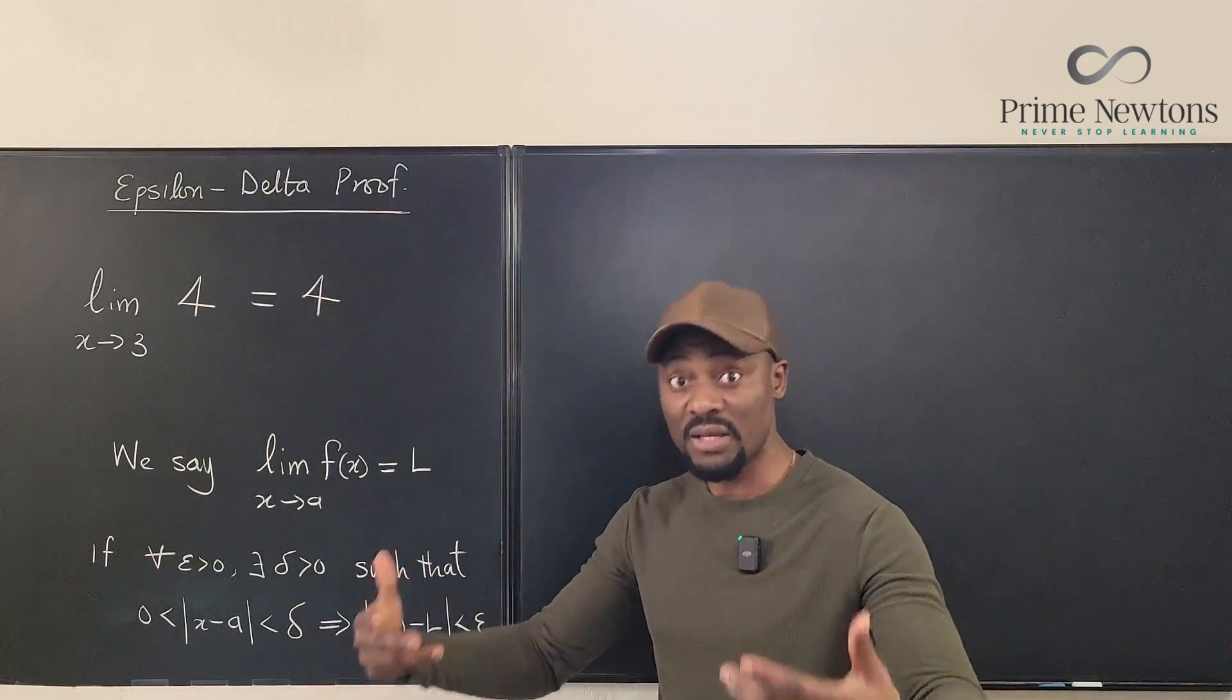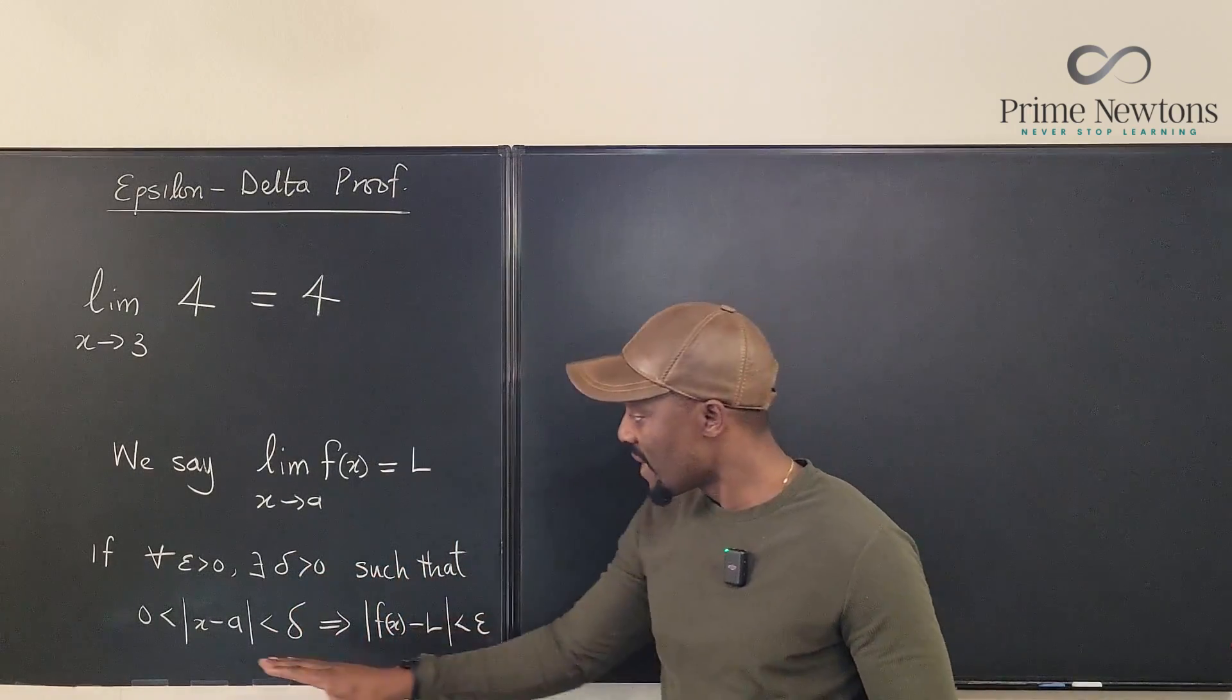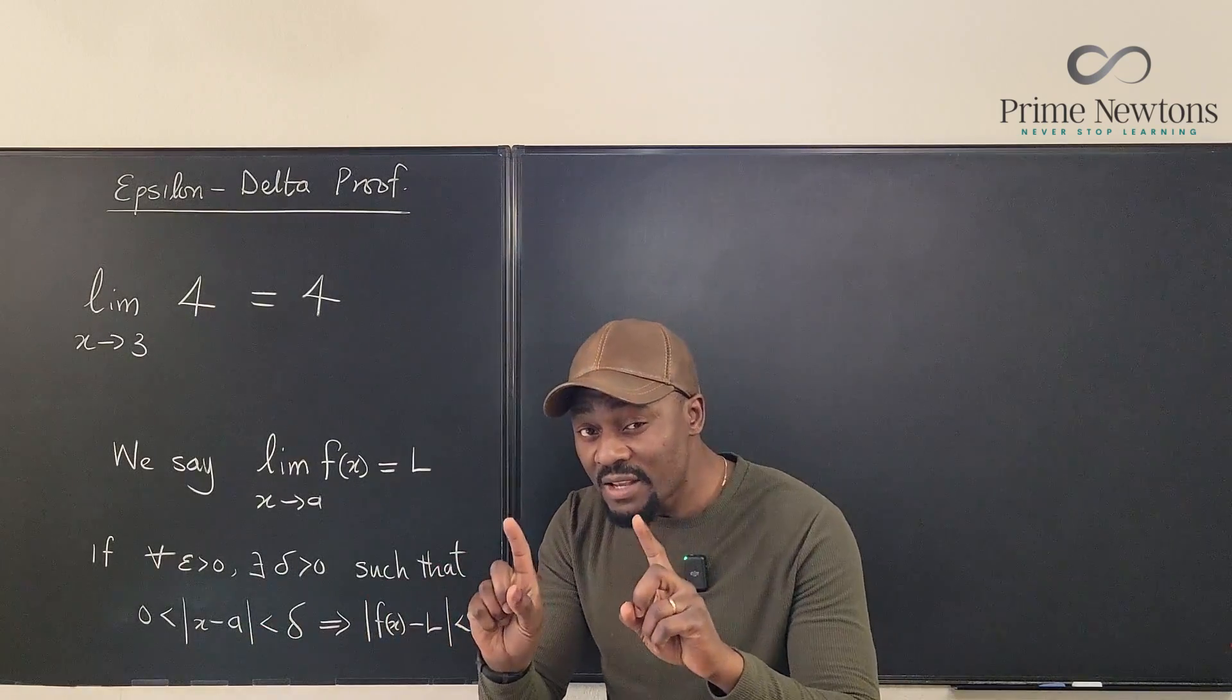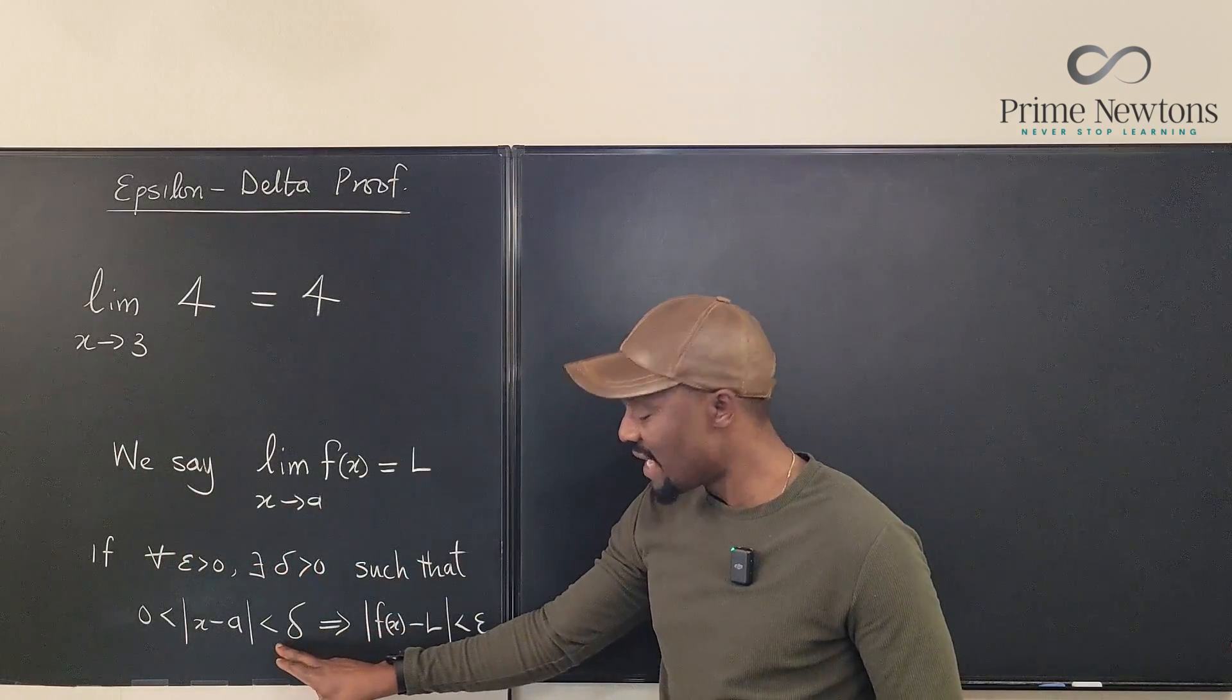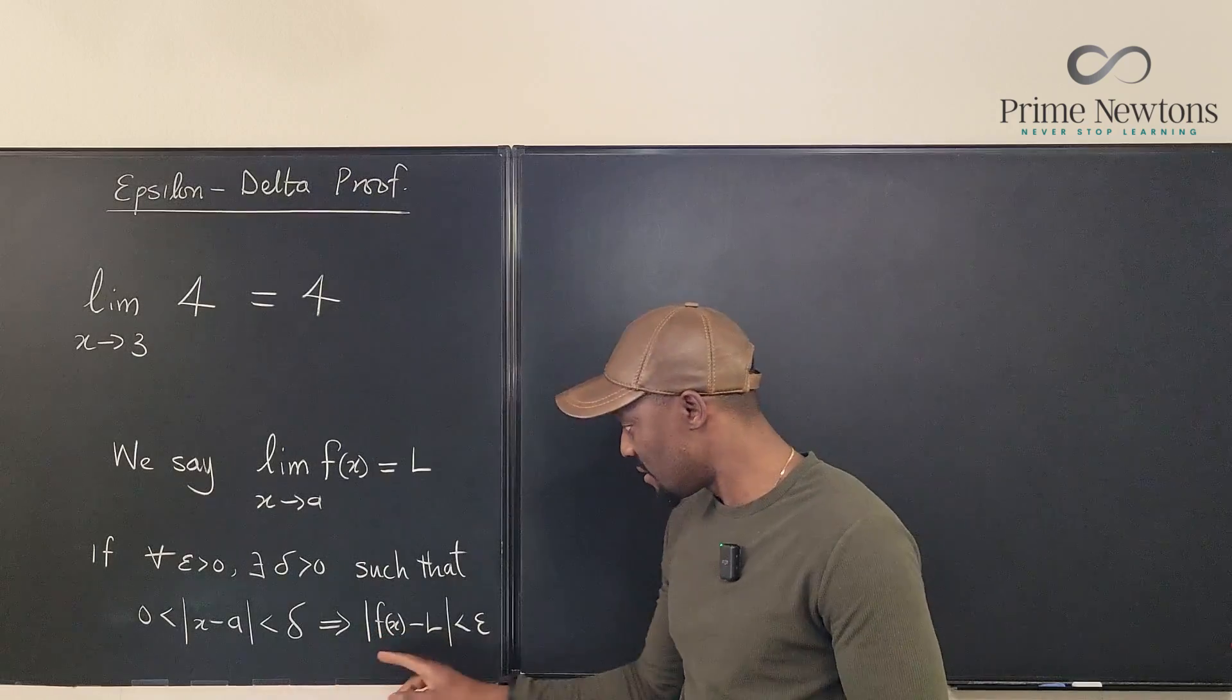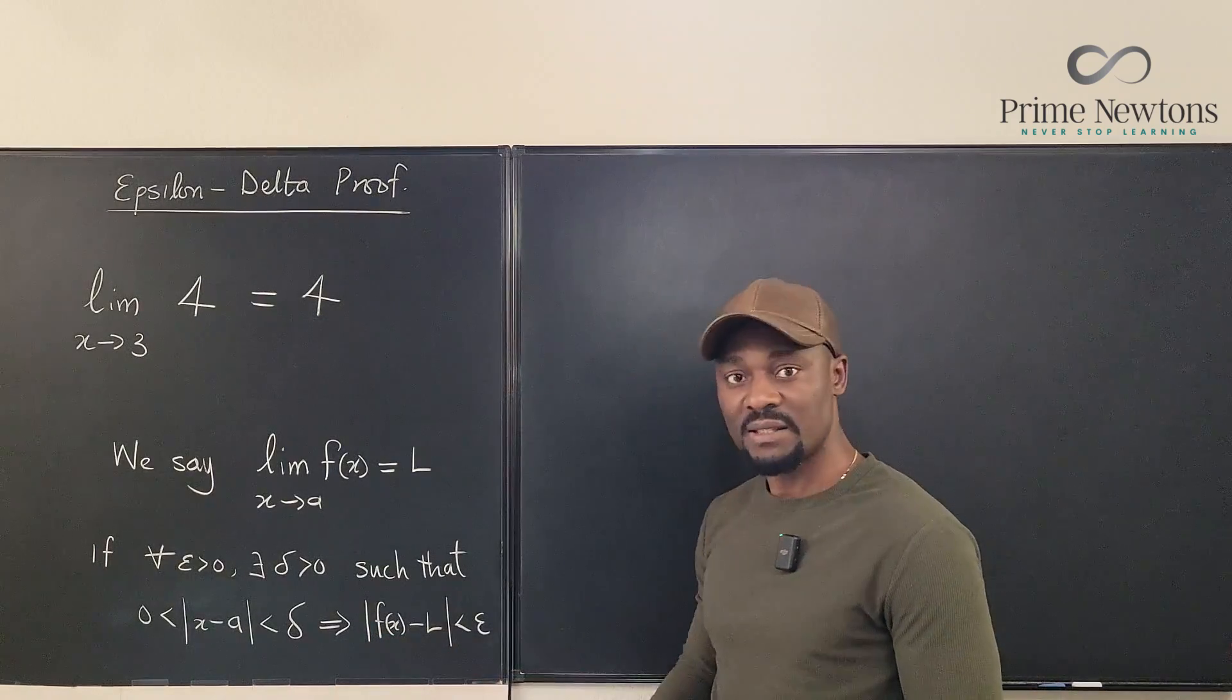there exists a positive value of delta such that if the distance from the point of interest that we have, which is point A, is less than delta, then that means that the distance of the function from the limit point is less than epsilon.